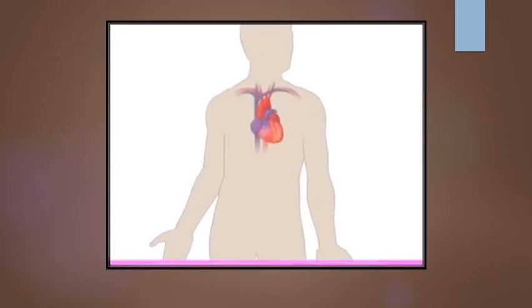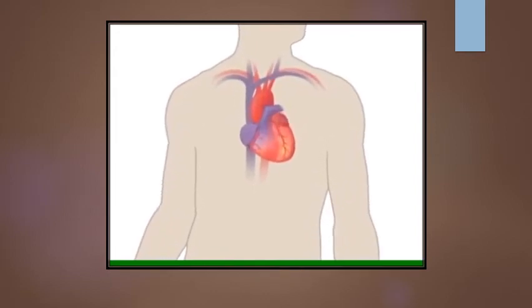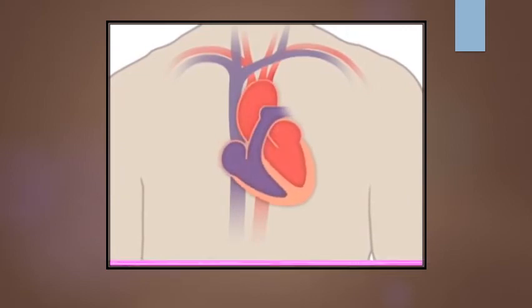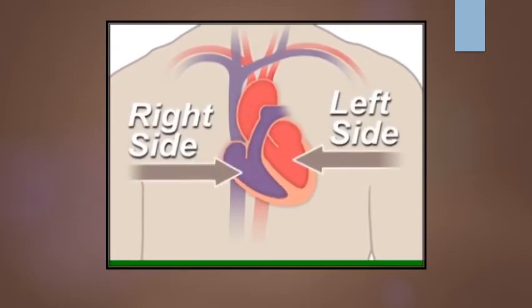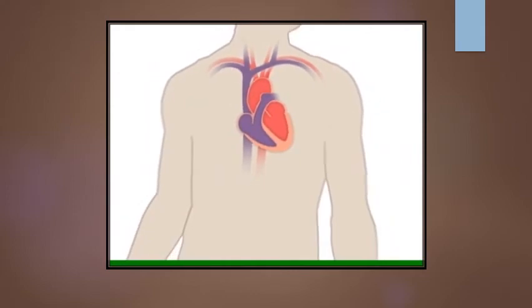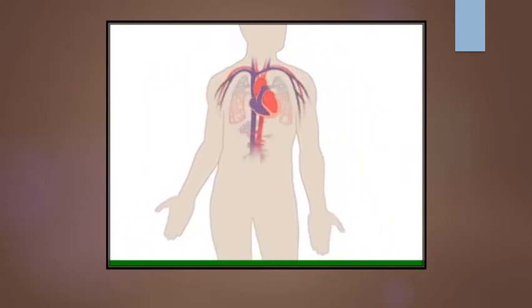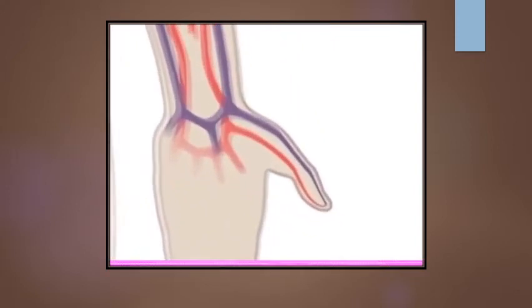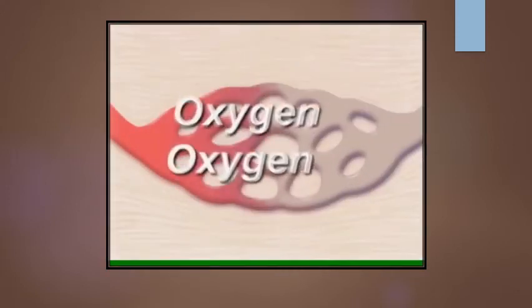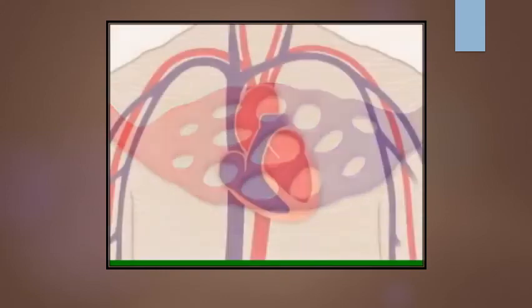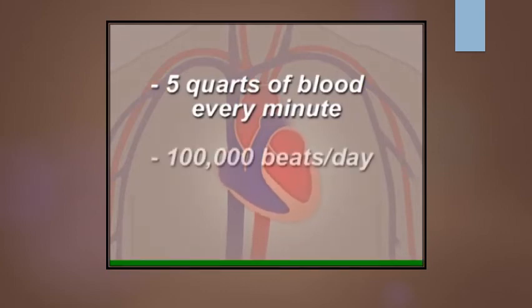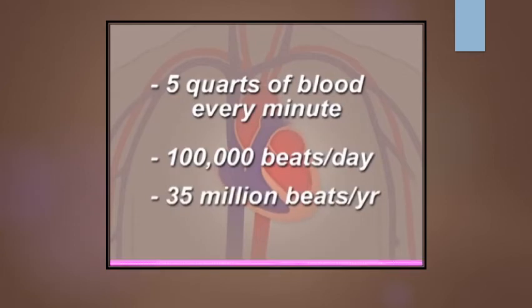Your heart is a pump. It's a muscular organ about the size of your fist and is located slightly left of center in your chest. Your heart is divided into the right and left side. The division protects oxygen-rich blood from mixing with oxygen-poor blood. Together, your heart and blood vessels comprise your cardiovascular system, which circulates blood and oxygen around your body. In fact, your heart pumps about five quarts of blood every minute and it beats about 100,000 times in one day. That's about 35 million times in a year.